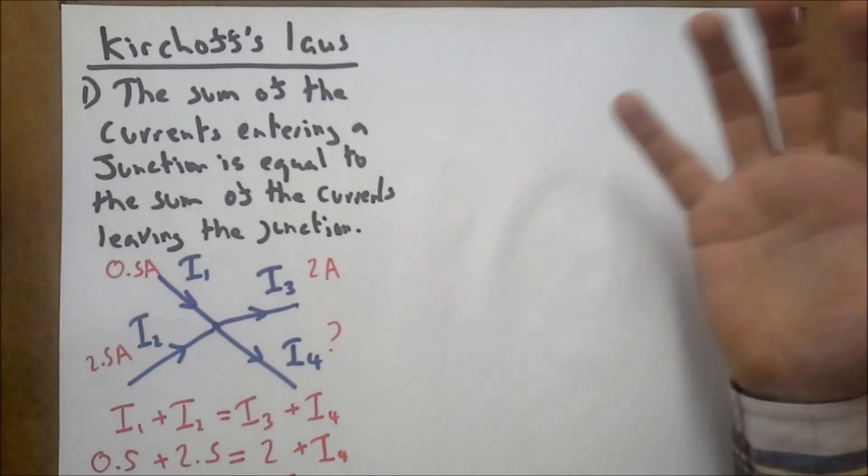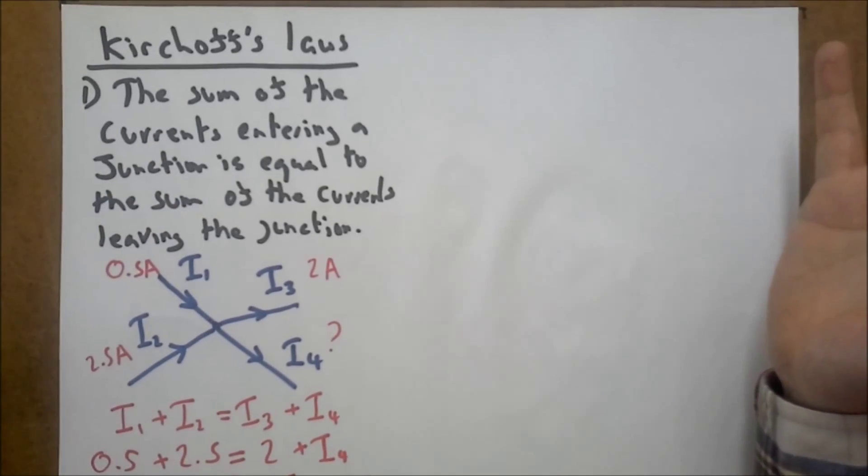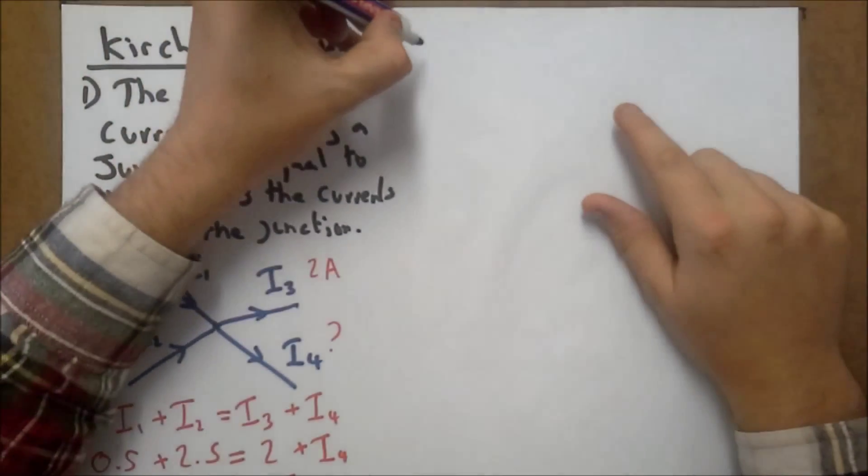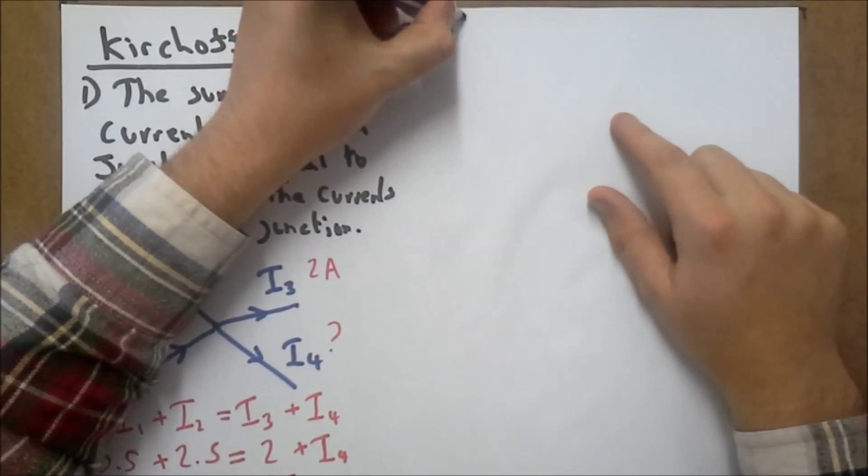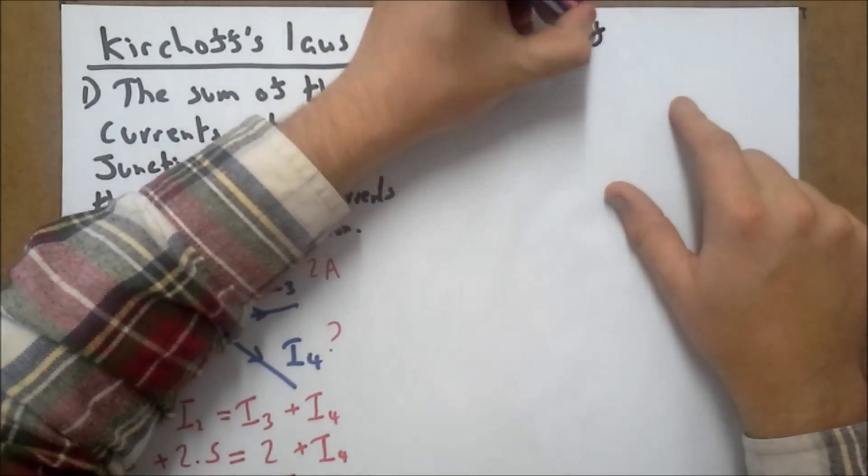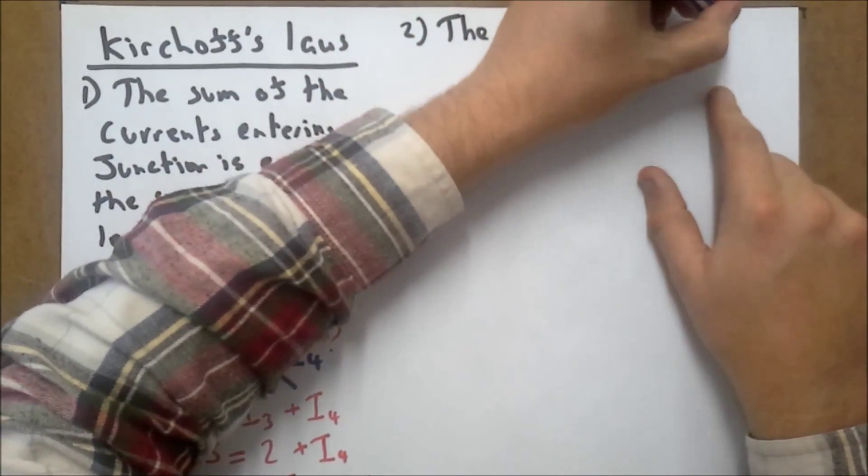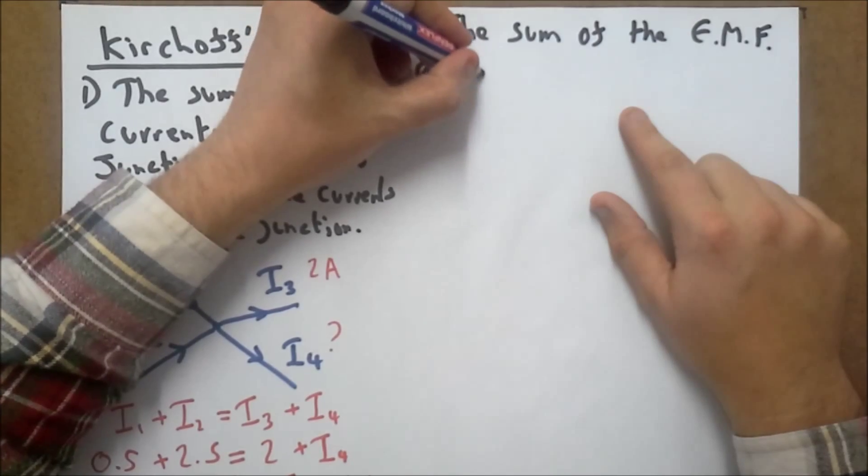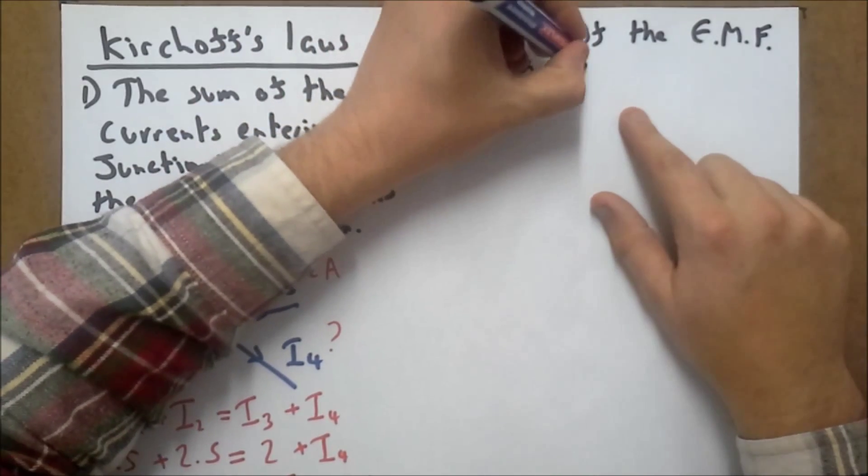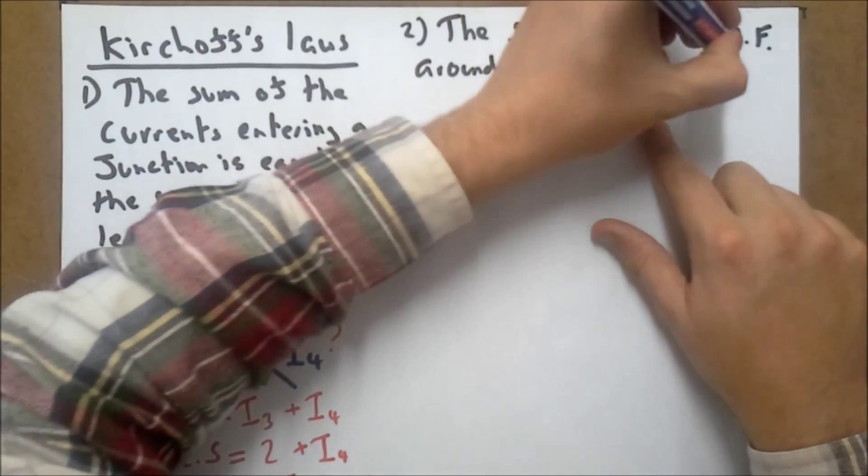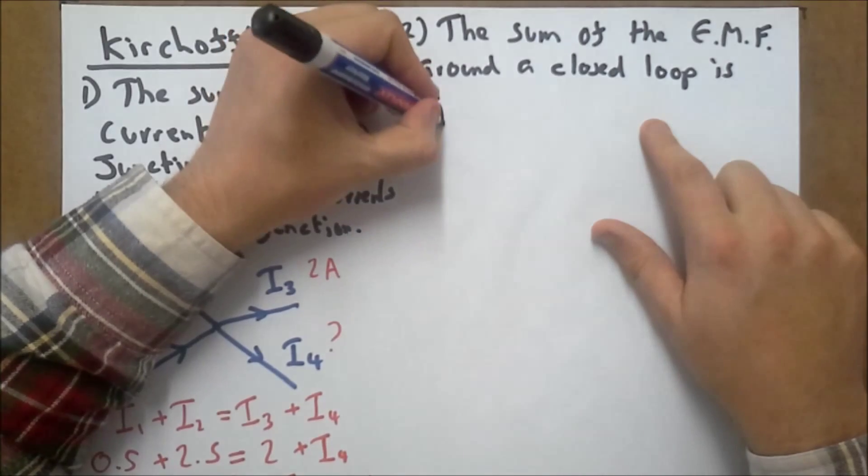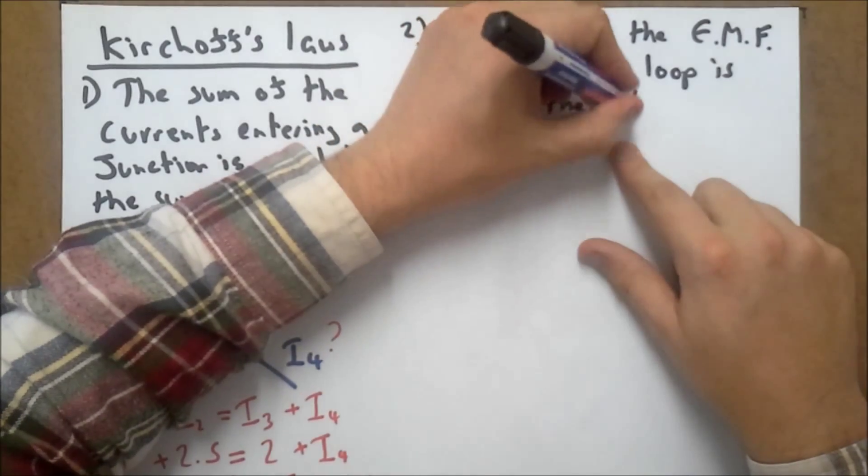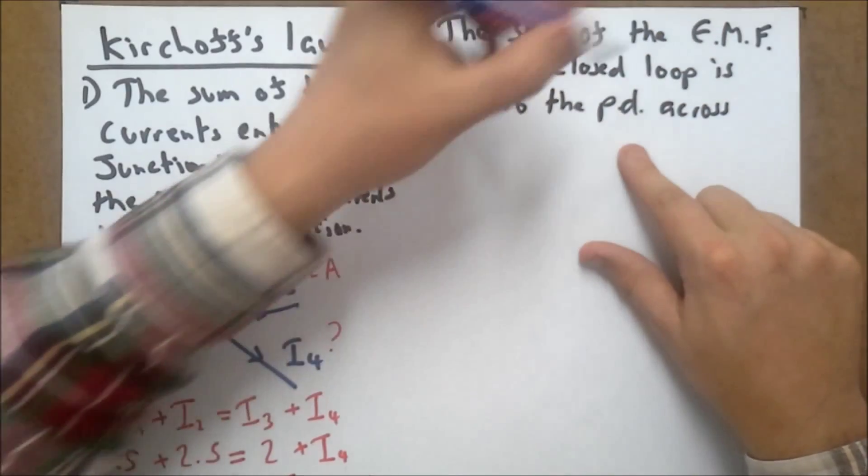and it's to do with the conservation of charge. Electrons have got negative charge, the universe says charge has to be conserved, so they can't just disappear. The second law states that the sum of the EMFs around a closed loop is equal to the potential difference across the load.